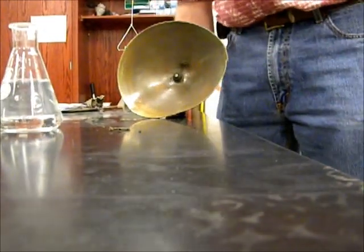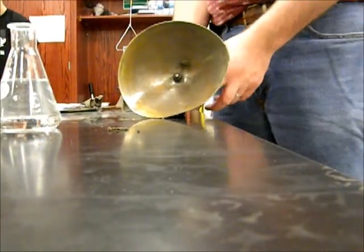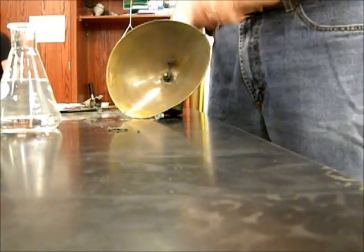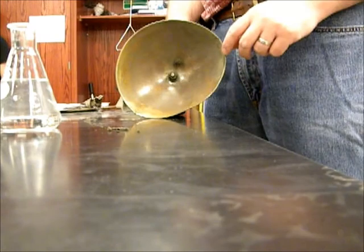So this is a carbide lamp or lantern. They used to be used on miners' helmets. And it's not a very good idea to have an open flame in a mine, so eventually they stopped doing that because explosions happen.